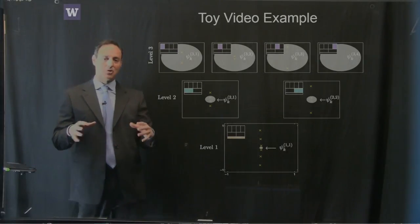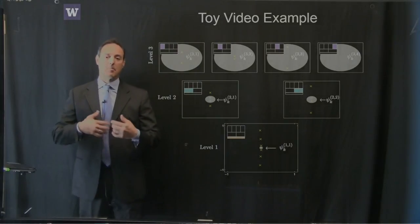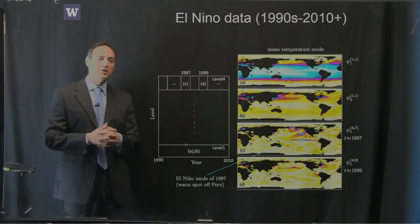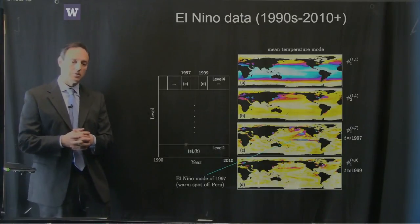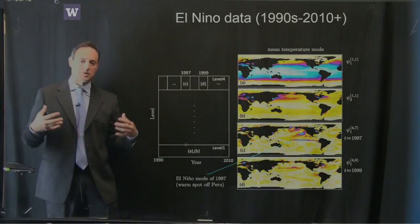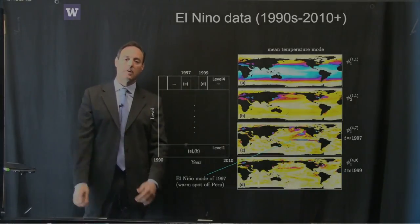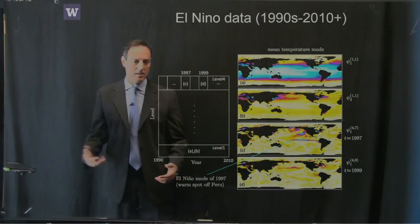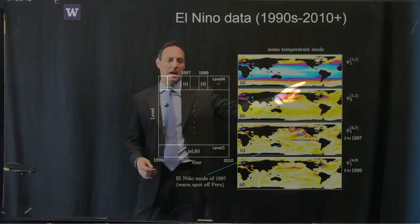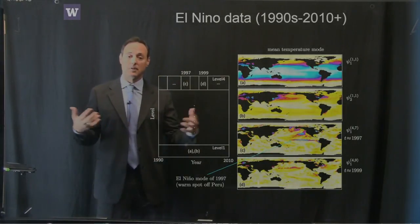We apply this to El Niño ocean temperature data from the 1990s to 2010, freely downloadable from a NOAA website. We simply apply this principled multi-res approach to the whole dataset with recursive refinement. At the first level of the analysis, the dominant mode that pops out is the mean temperature mode across the entire ocean — a background stationary mode with period infinity.